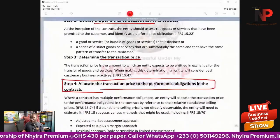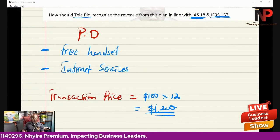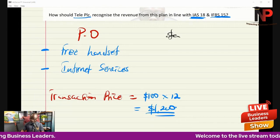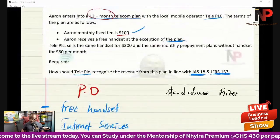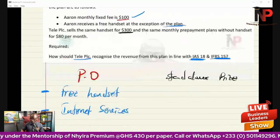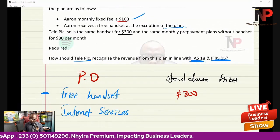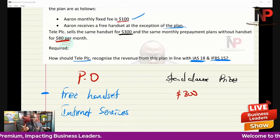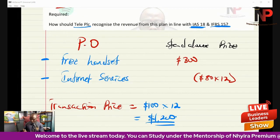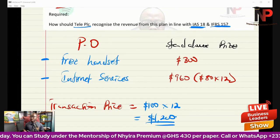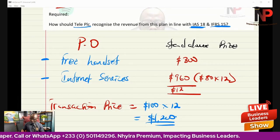Step four: allocate the transaction price. The standalone price of the handset is $300. The internet service without the handset would be $80 per month × 12 = $960. Total standalone price = $300 + $960 = $1,260.